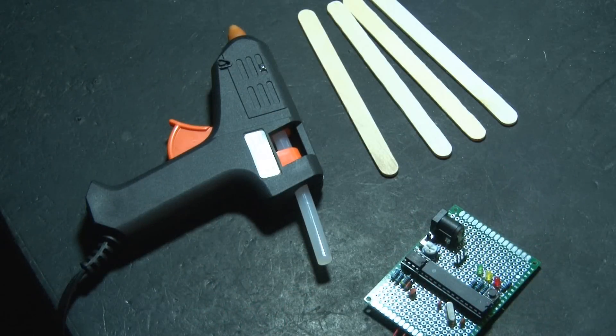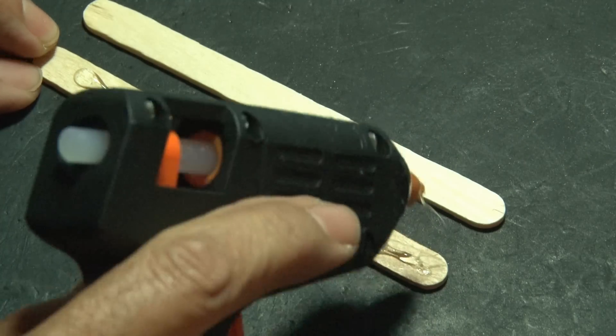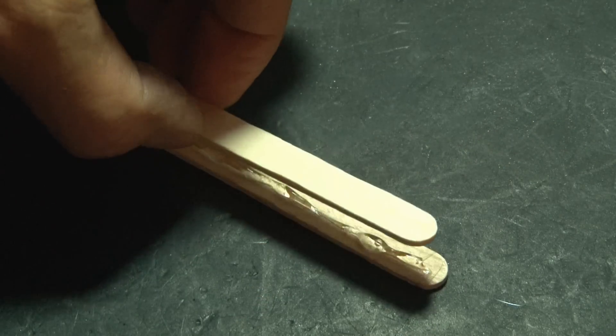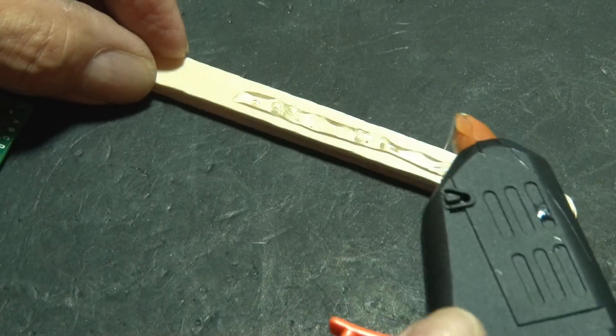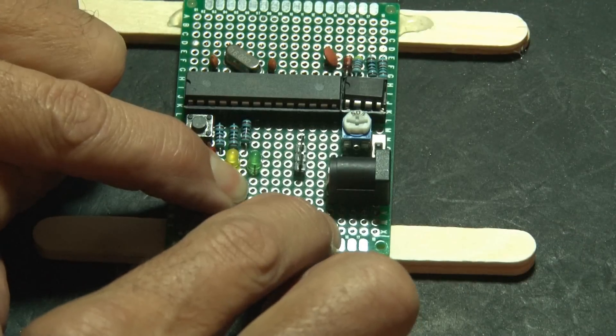Now we're going to need some hot glue and some more popsicle sticks because we need to make a base for our electronics. So by using some hot glue, we'll put two sticks together and glue our circuit board to that, and do the same on the other side.